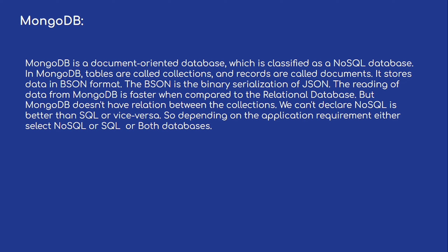In MongoDB, tables are called collections and records are called documents. Try to remember this terminology. It stores data in BSON format, which is a binary serialization of JSON — it looks like JSON but is stored in binary format. Reading from MongoDB is faster compared to relational databases.